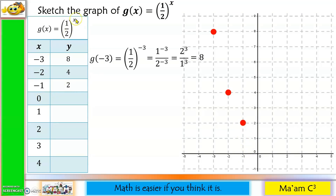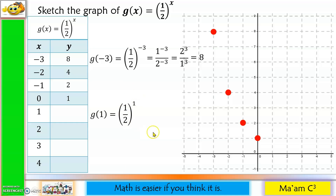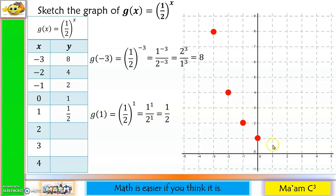For x = 0: (1/2) raised to 0 equals 1, since any number except 0 raised to 0 is 1. We plot (0, 1). For x = 1: g(1) = (1/2) raised to 1. Distributing the exponent gives 1 raised to 1 over 2 raised to 1, which is 1 over 2, or 1 half. We divide 1 unit into 2 parts and place the point at the middle.